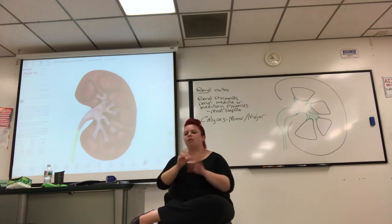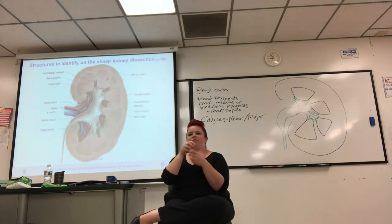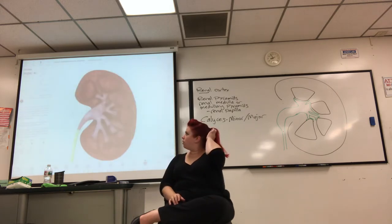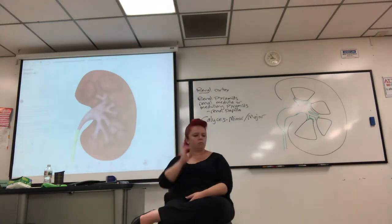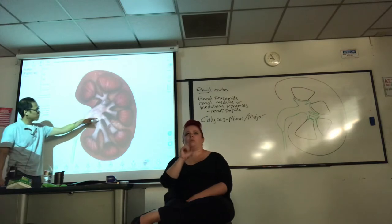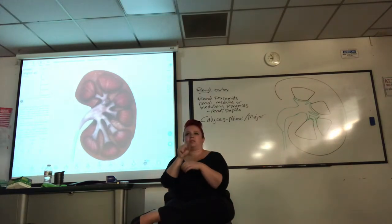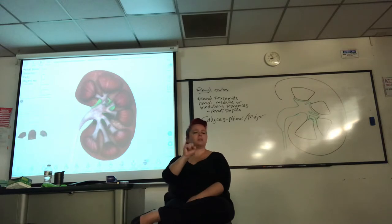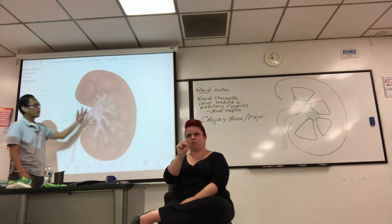Now I want you to see how the nephron fits into the cortex/medulla. And one more thing to mention: there's space around the calyces inside the kidney — that's called the renal sinus. The renal sinus is the space around the calyces system.